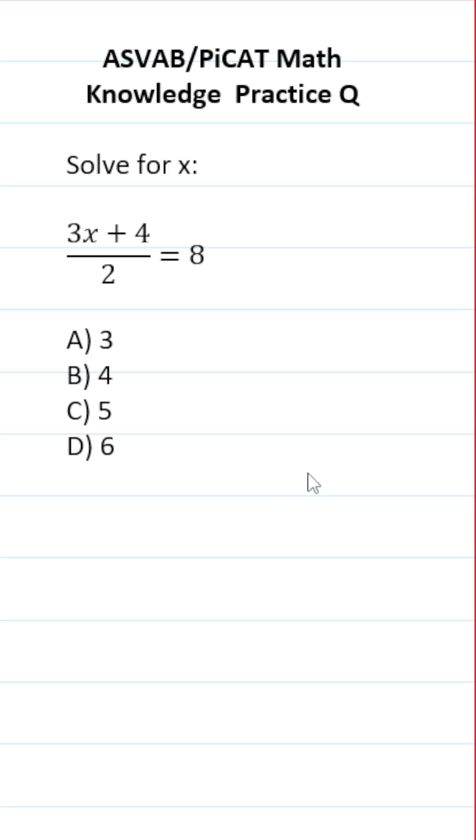This ASVAB/PiCAT math knowledge practice test question says solve for x. We have 3x plus 4 divided by 2 equaling 8. When it says solve for x, it means get x equal to something by itself.